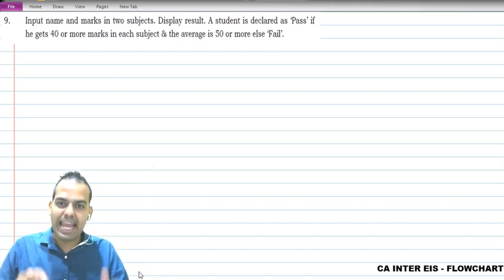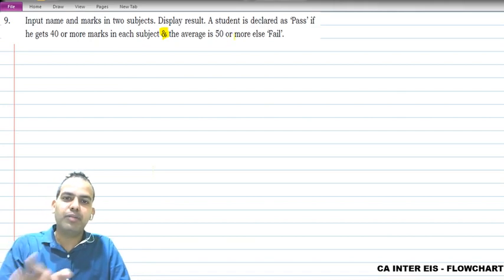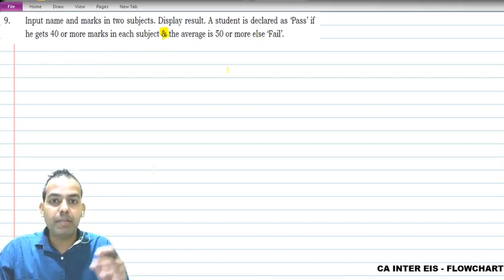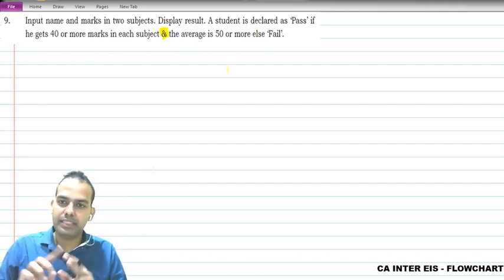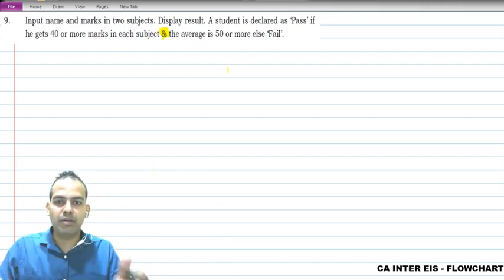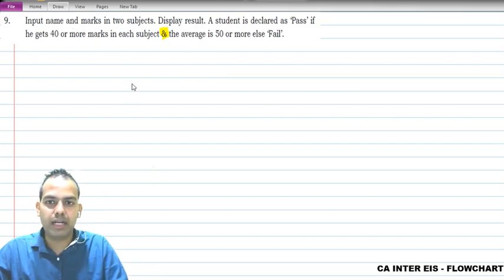And this is something interesting which I have added to the question - and average should be 50 or more, or else fail. So a student will pass only if he gets 40 marks in each subject and average should be more than 50. It is similar to in your CA inter examination whatever happens, right? So let's go ahead with this flowchart.